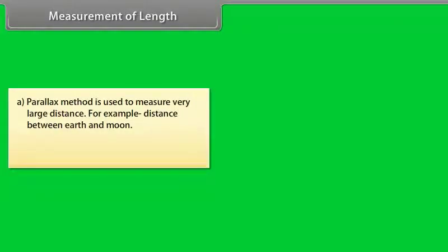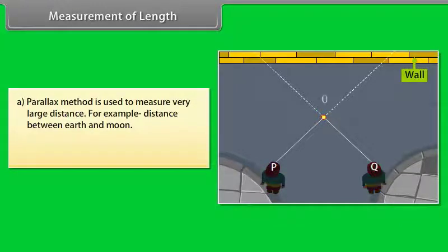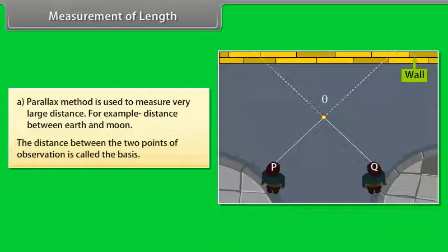Parallax method is used to measure very large distance, for example, distance between earth and moon. Let us understand with an example. A girl is observing the rod against a wall from two different points P and Q. She notices that the position of the rod seems to change with respect to the wall.